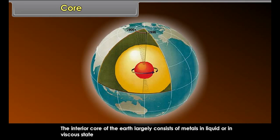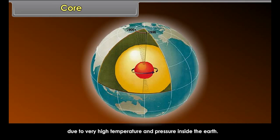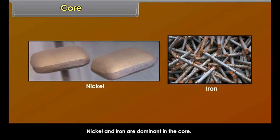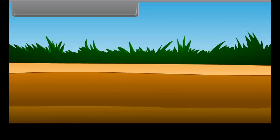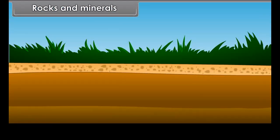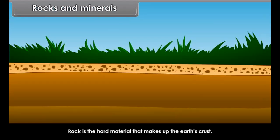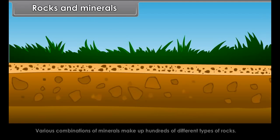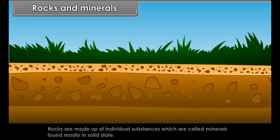Core. The innermost layer or the center of the Earth is the core. The core of the Earth has a radius of about 3,400 kilometers. The interior of the core largely consists of metals in liquid or viscous state due to very high temperature and pressure inside the Earth. Nickel and iron are dominant in the core.